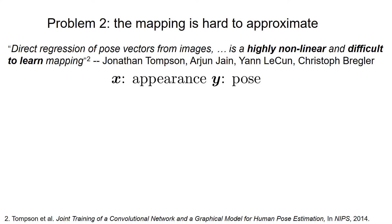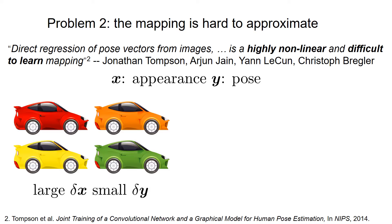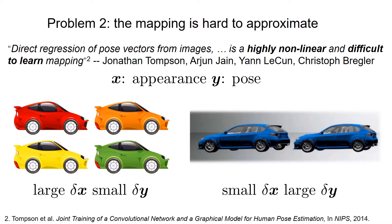Secondly, it is known that a function that directly regresses pose vectors from images is difficult to approximate. For example, the input appearance can vary significantly while the target value remains unchanged. Or, the input appearance can change slightly while the function needs to predict a very different pose value.